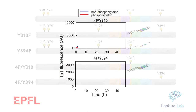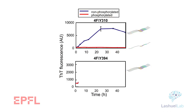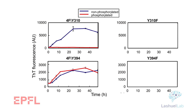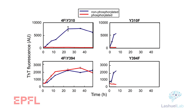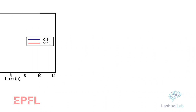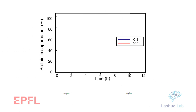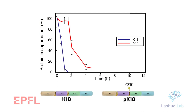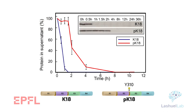Results showed that phosphorylation at tyrosine-310, but not at tyrosine-394, was sufficient to inhibit the fibrillization of tau. When the other tyrosine residues in the N-terminal domain were also phosphorylated, the inhibitory effect was observed. These findings were confirmed when the investigators looked at the microtubule binding domain only — there again, phosphorylation at tyrosine-310 alone was sufficient to attenuate the fibrillization of this highly aggregation-prone domain of tau.